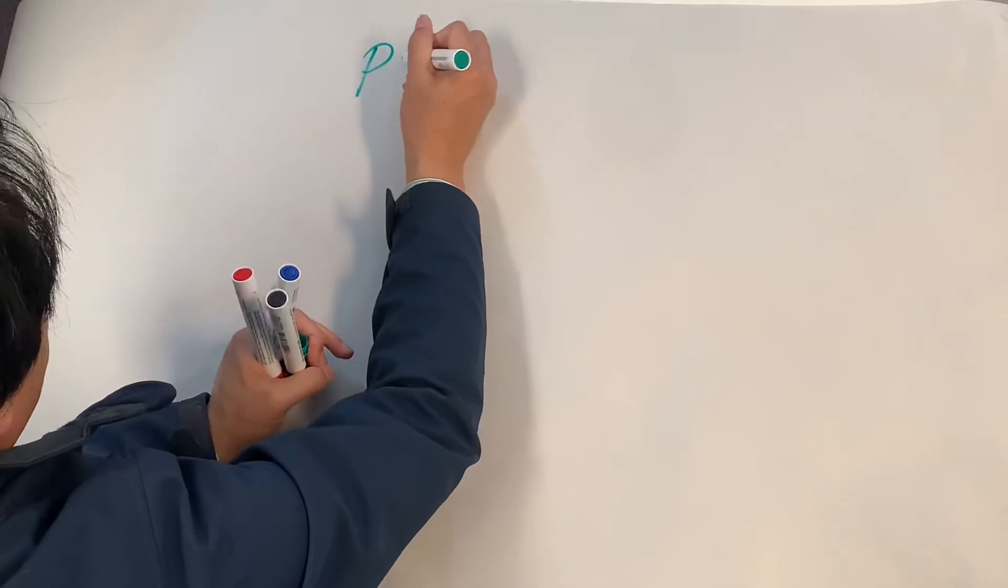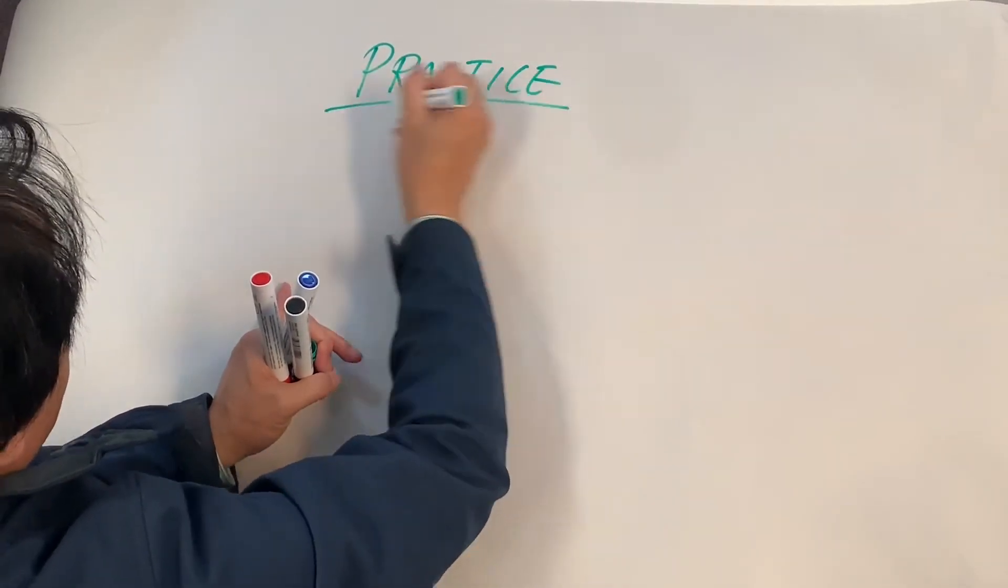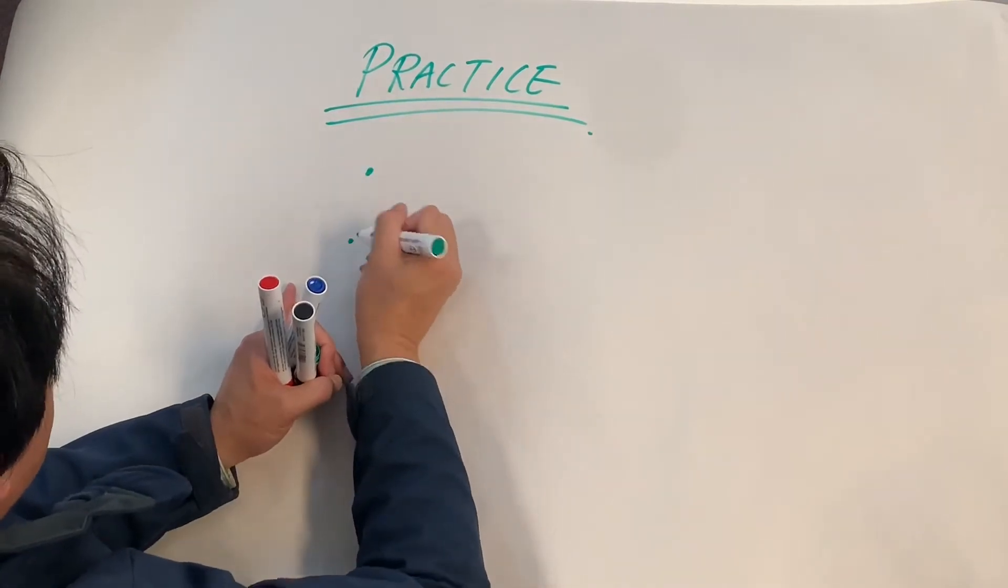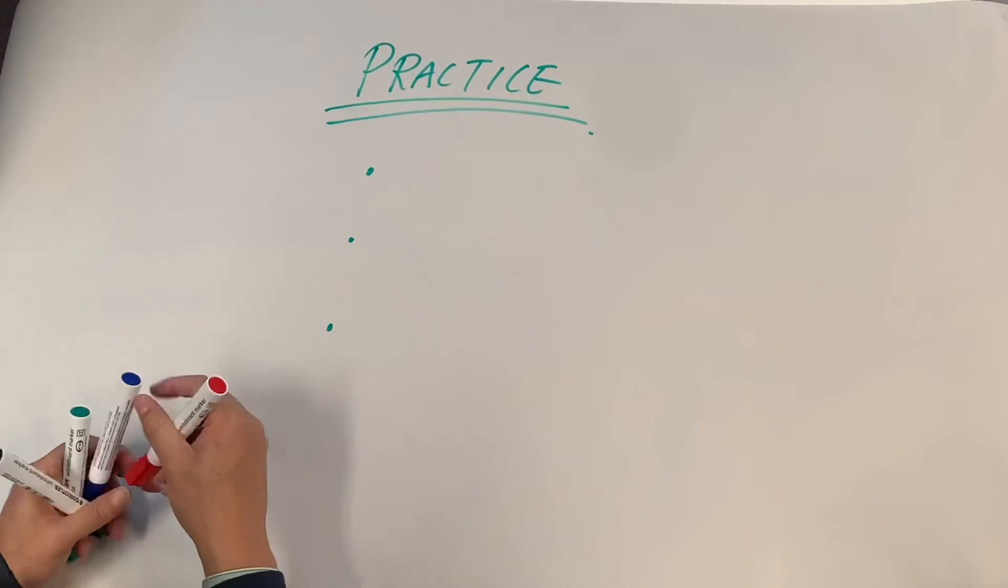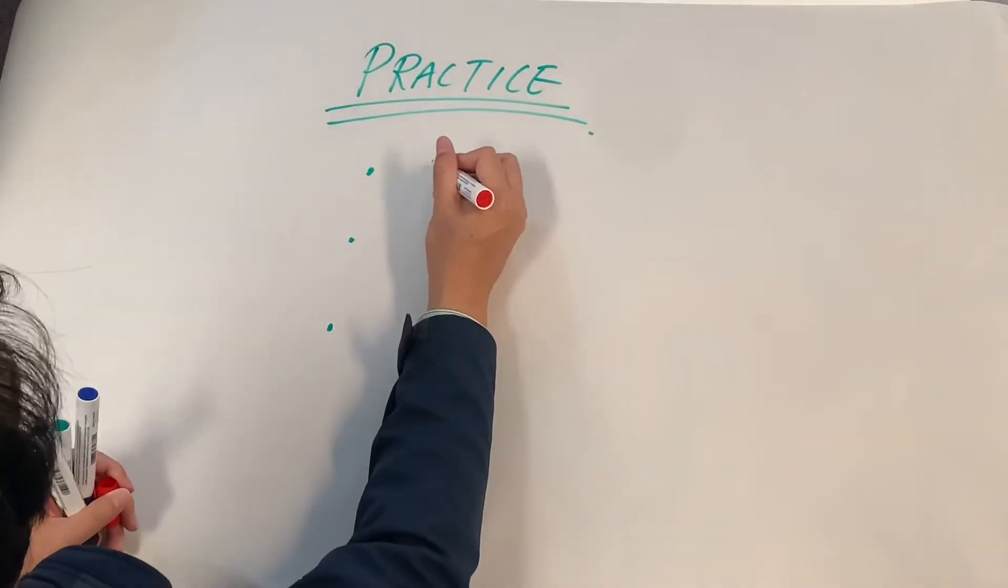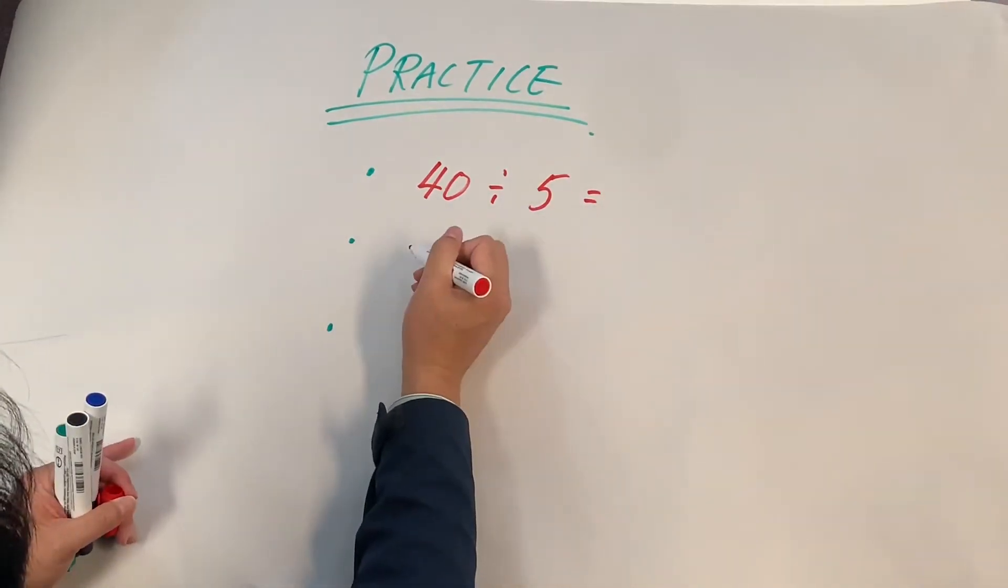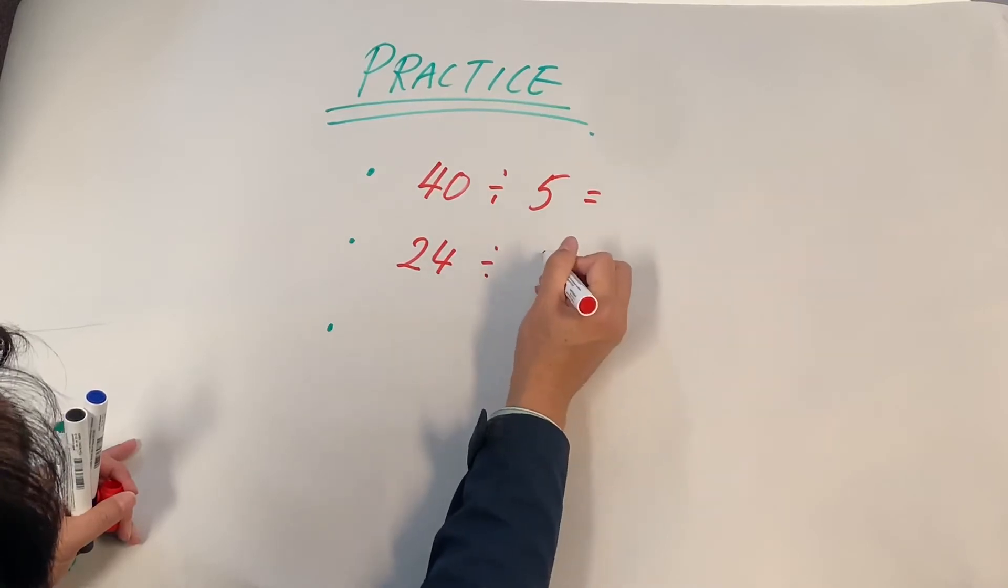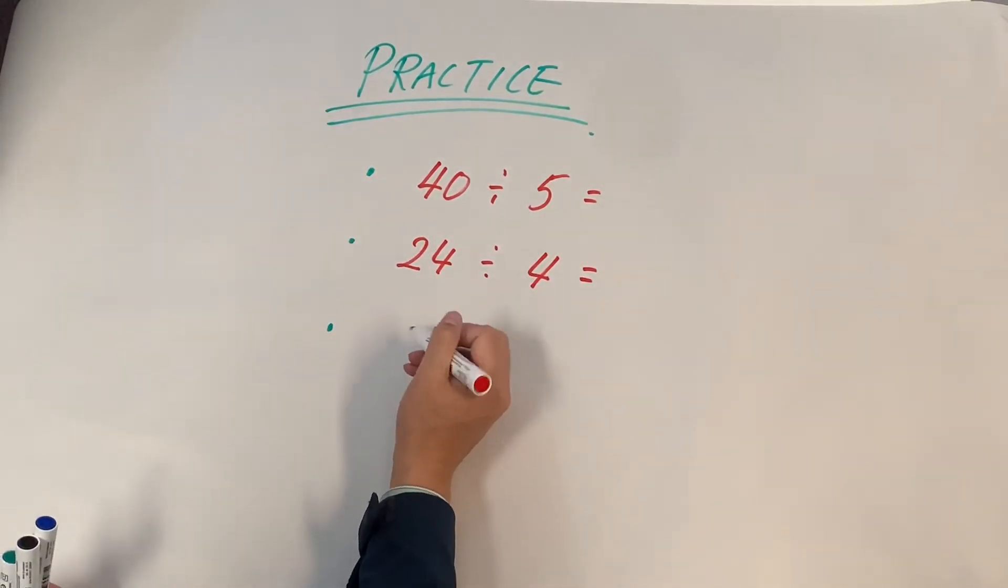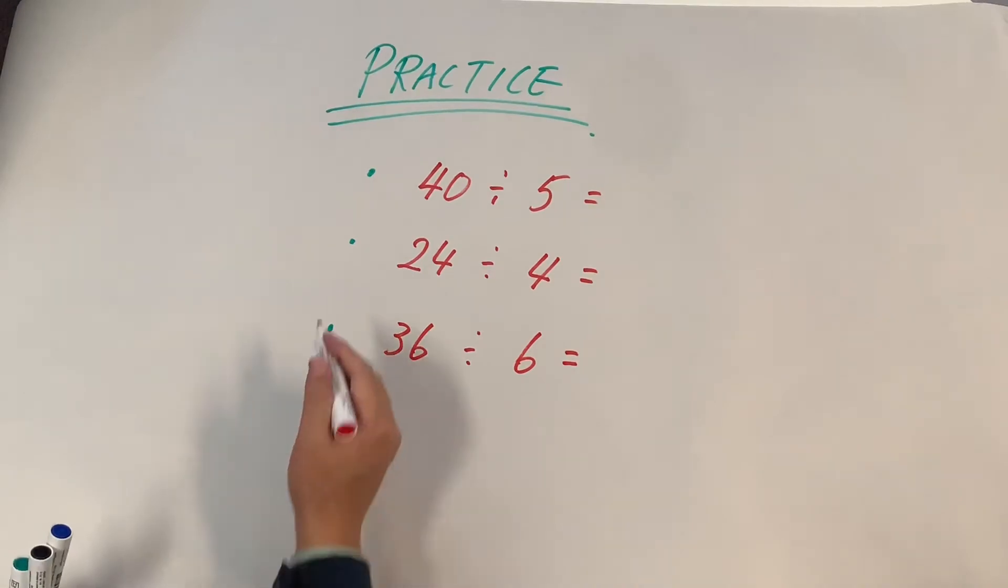Okay. Let's practice. I'm going to give you some questions. You can use a sharing model. Can you do 40 divided by five? Can you do 24 divided by four? Can you do 36 divided by six? Let's practice.